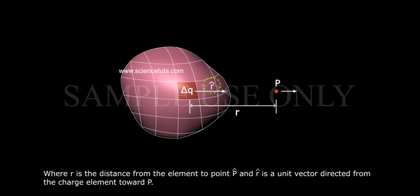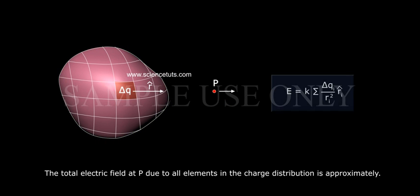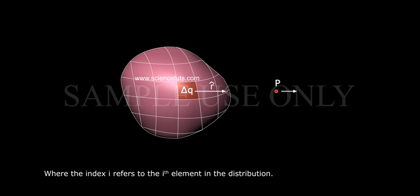The total electric field at P due to all elements in the charge distribution is approximately E equals k sigma delta q i by r i square r i cap, where the index i refers to the i-th element in the distribution.